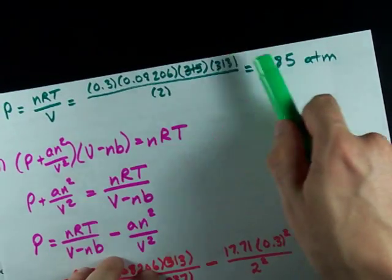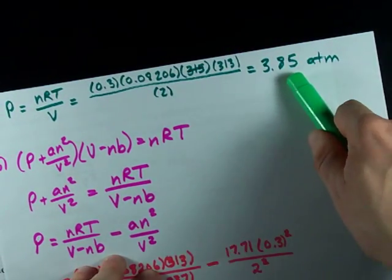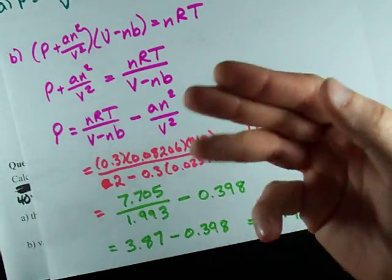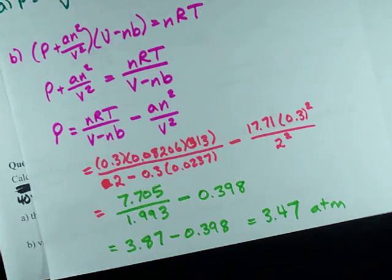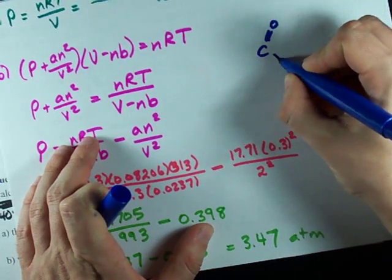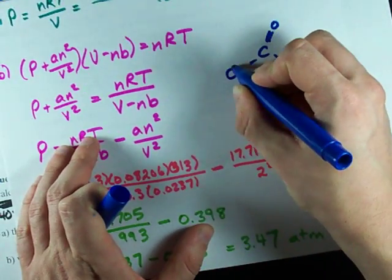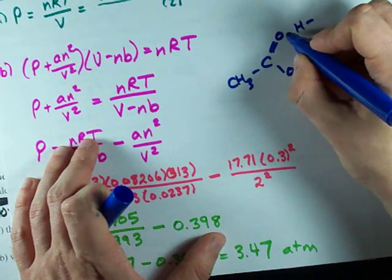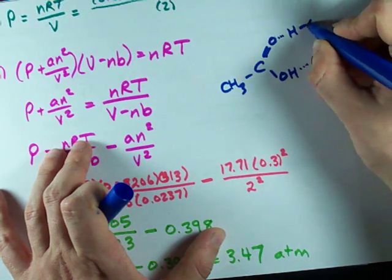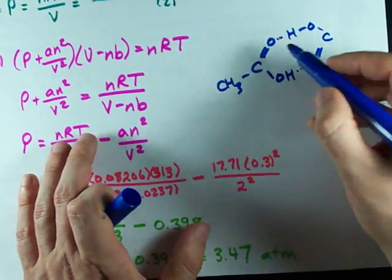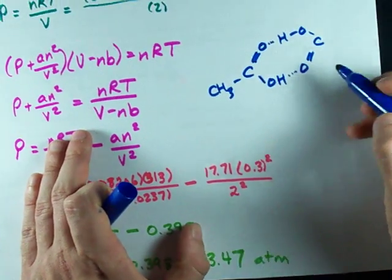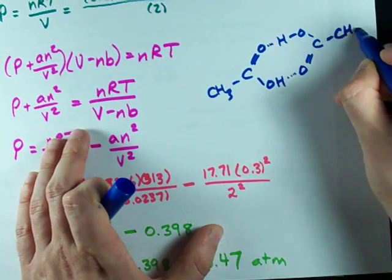Look at that. So the ideal gas equation says the pressure should be 3.85, but the actual pressure is 3.47. And that's exactly what I would expect for a molecule with heavy intermolecular forces. In fact, what happens with acetic acid, if you know the structure of it, is that there's hydrogen bonding between the carbonyl oxygen and the hydrogen of each molecule. The OH from one connects with the carbonyl of the other, and the OH from the other connects with the carbonyl from the original one. And they actually stick together.